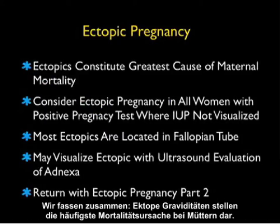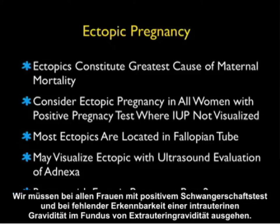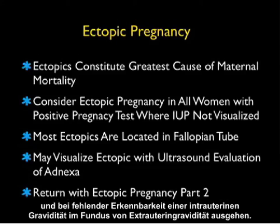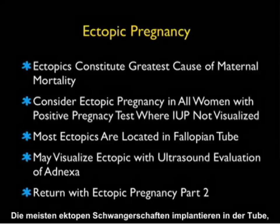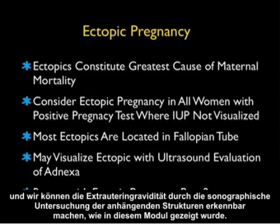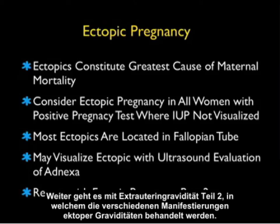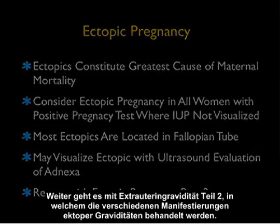In conclusion, ectopic pregnancies constitute the greatest cause overall of maternal mortality. We must consider an ectopic pregnancy in all women with a positive pregnancy test where an intrauterine pregnancy is not visualized within the fundal part of the uterus. Most ectopic pregnancies are going to be located in the fallopian tube, and we may actually visualize the ectopic with ultrasound evaluation of the adnexa, as shown in this module. We'll return with ectopic pregnancy part 2, which goes over the varied manifestations of ectopics.